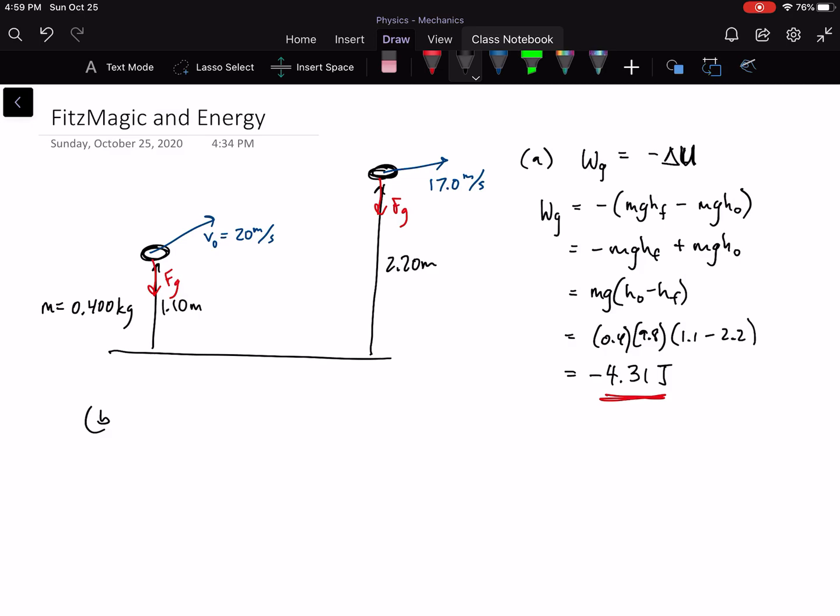For B, how much work was done by drag on the football during this time? Well, if we're thinking about the forces acting on the football, we know that there really should be only two. There should be gravity and there should be drag. And drag is going to oppose, always, the direction of motion of the football. So I've drawn the force vector for drag opposite the velocity vectors there. And that means that since drag is a non-conservative force, then it's going to be the sole contributor to the work done by non-conservative forces. So this is just equal to the work done by drag.